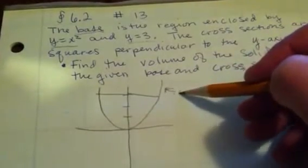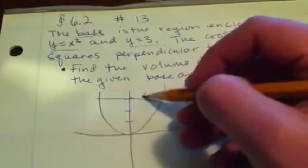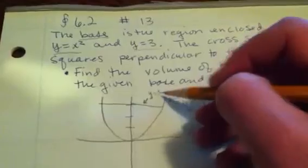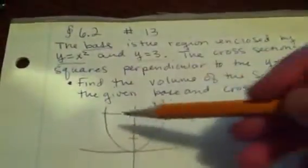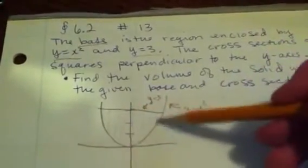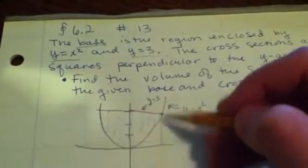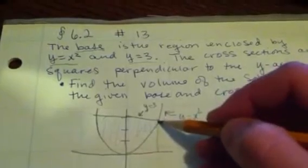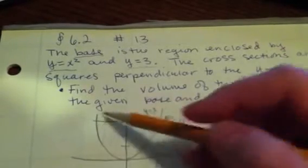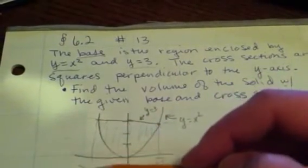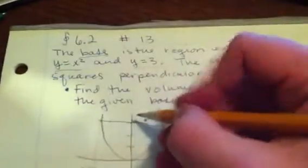So we'll label it. This right here is y equals 3, and this extends forever—it's a horizontal line, but this is where it's enclosing. We know this point right here is where y equals 3, so this must mean that this is the square root of 3, and this right here is the negative square root of 3. You can label this as 3.